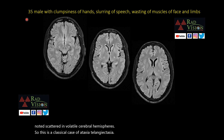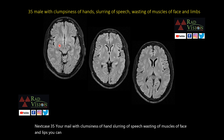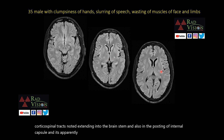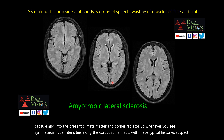Next case: a 35-year male with clumsiness of hands, slurring of speech, and wasting of muscles of the face and limbs. There are hyperintensities along the corticospinal tracts extending into the brainstem, posterior limb of the internal capsule, periventricular white matter, and corona radiata. Symmetrical hyperintensities along the corticospinal tracts with this history are typical of amyotrophic lateral sclerosis.